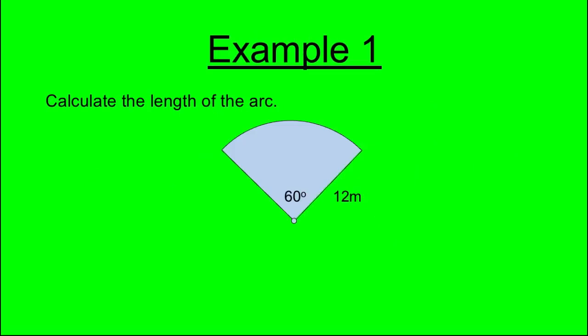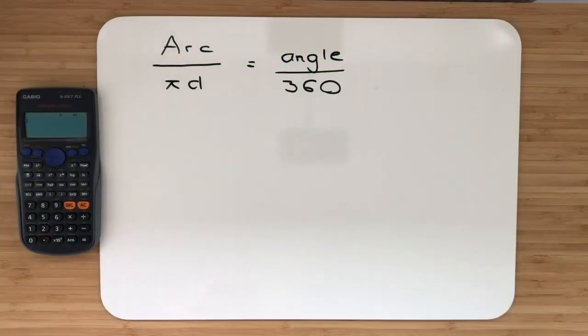Example 1. Calculate the length of the arc. In example 1, we're asked to calculate the length of the arc. We're given an angle at the centre of 60 degrees and a radius of 12 metres.